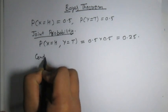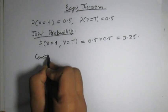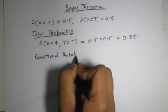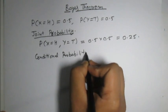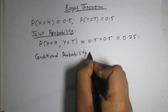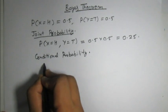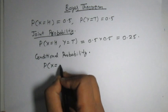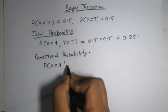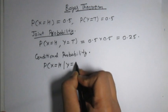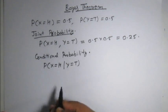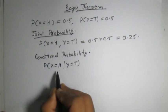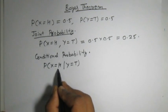Conditional probability is denoted as P(X = H | Y = Tail). It means if it is fixed that the second event is tail, then we want to calculate the probability of the first event.